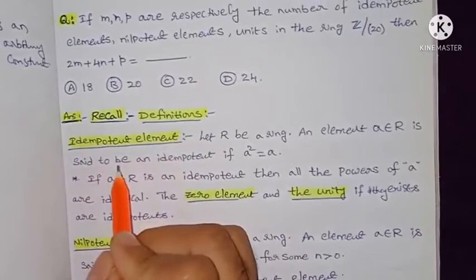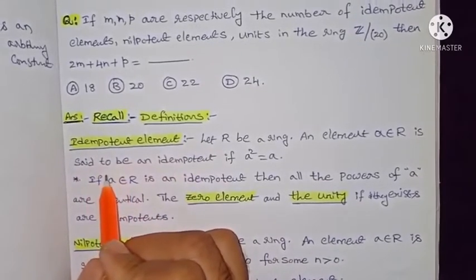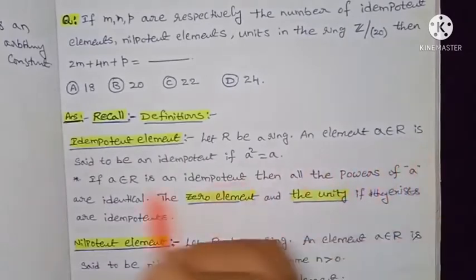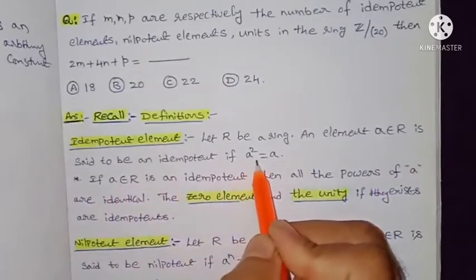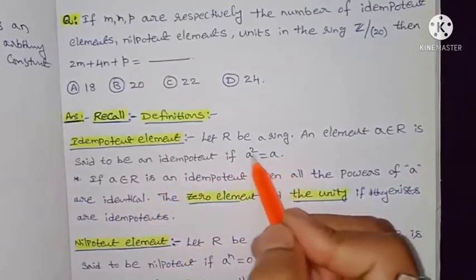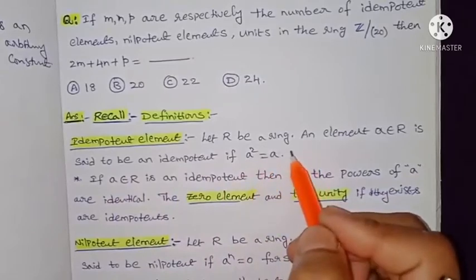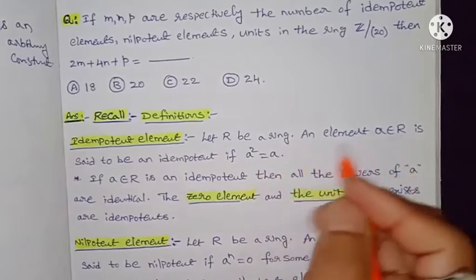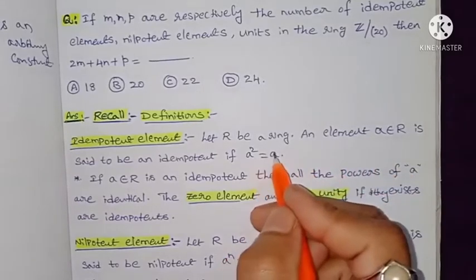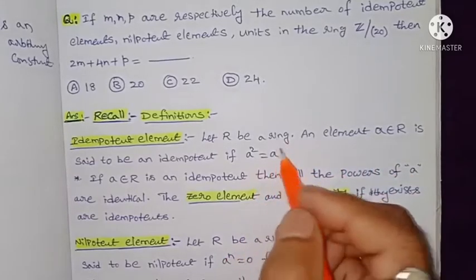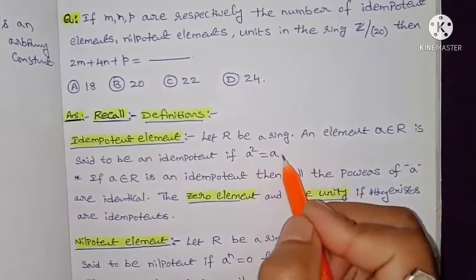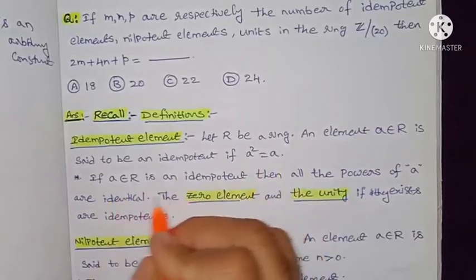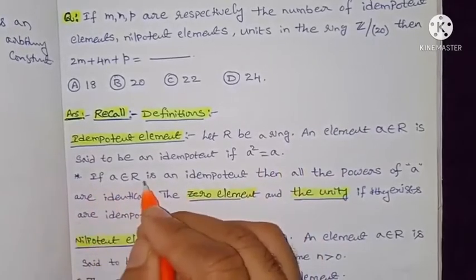First, the idempotent element definition: let R be a ring. An element a belonging to R is said to be an idempotent element if a squared equals a. If it satisfies this condition, we say that element is an idempotent element of the ring.